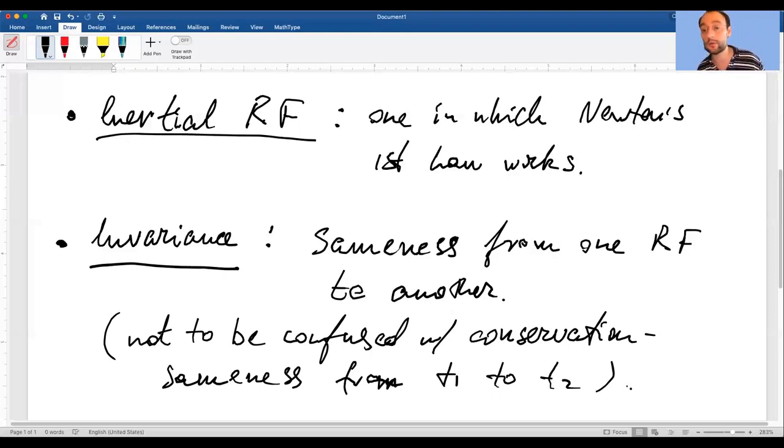For example, energy is conserved but it's actually not invariant. So let's say kinetic energy. Let's say you have two objects colliding and recoiling, like two carts on frictionless tracks. They collide and they recoil. The total energy, in this case it's just kinetic energy, the total kinetic energy of the combined system before the collision and after collision, t1 and t2, has not changed. It has been conserved.